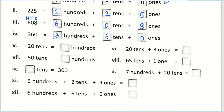The next one — twenty tens gives you how many hundreds? Two hundred. Twenty tens plus three ones gives you: twenty tens is two hundred, plus three, gives you two hundred three. The same way, fifty tens gives you five hundred. And sixty-five tens plus one — sixty-five tens means six hundred fifty, plus one, gives you six hundred fifty-one.